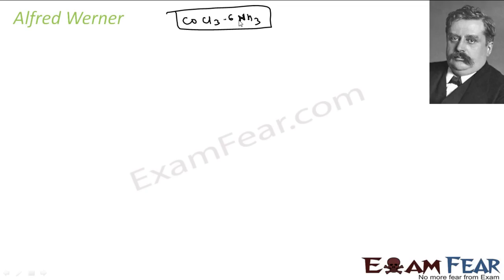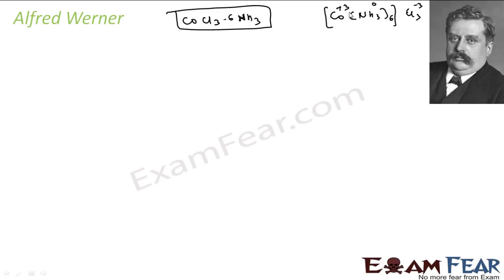Alfred Werner proposed the structure of this compound. He placed cobalt inside a box with a coordination sphere. The oxidation state of cobalt works out to plus three — chlorine contributes minus three and cobalt plus three, giving an overall neutral compound.